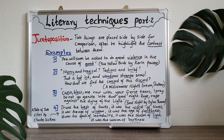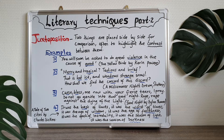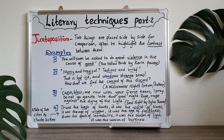Juxtaposition is when two things are placed side by side for comparison, often to highlight the contrast between them. So when you have a writer, a poet, or a playwright placing two things side by side for comparison, often to highlight the contrast between them, then we can talk about juxtaposition. When you juxtapose things it means you contrast them, and in the process of contrasting things you are also comparing them. So juxtaposition entails both comparison and contrast.